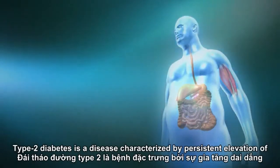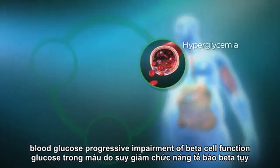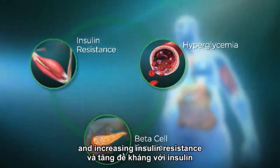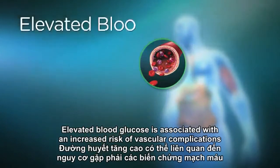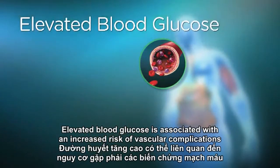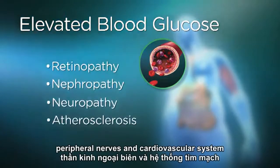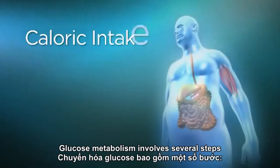Type 2 diabetes is a disease characterized by persistent elevation of blood glucose, progressive impairment of beta cell function, and increasing insulin resistance. Elevated blood glucose is associated with an increased risk of vascular complications affecting organs such as the eyes, kidneys, peripheral nerves, and cardiovascular system.